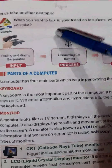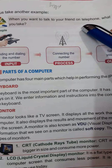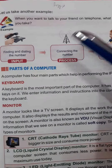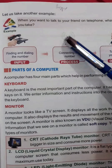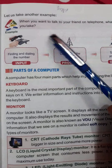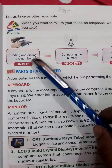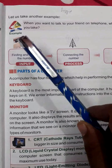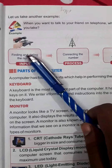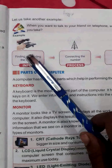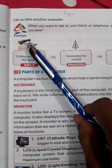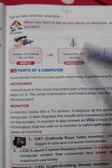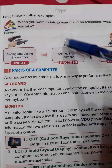Let us take another example. When you want to talk to your friend on the telephone, what steps do you take? First, you find whose number you need — finding and dialing the number. You find your friend's number and then dial it. That is the input step.